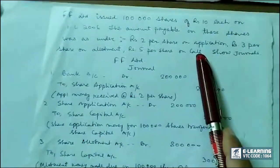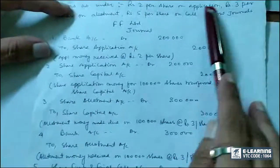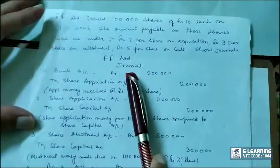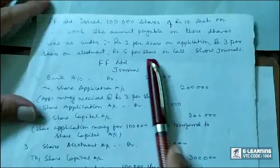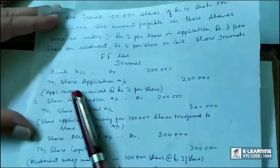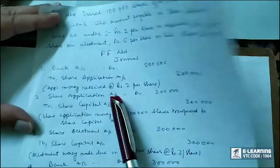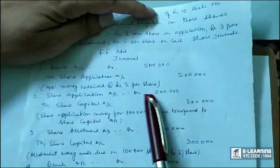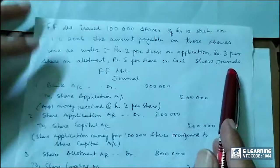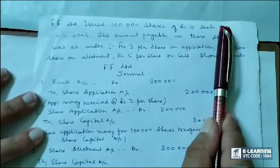So we are to show the journal entries of how this issue of share is subscribed. The name of the company is FF Ltd. First is rupees 2 per share on application: bank account debit to share application, 2 lakhs. Application money received at rupees 2 per share on 1 lakh shares — so 1 lakh shares into 2.